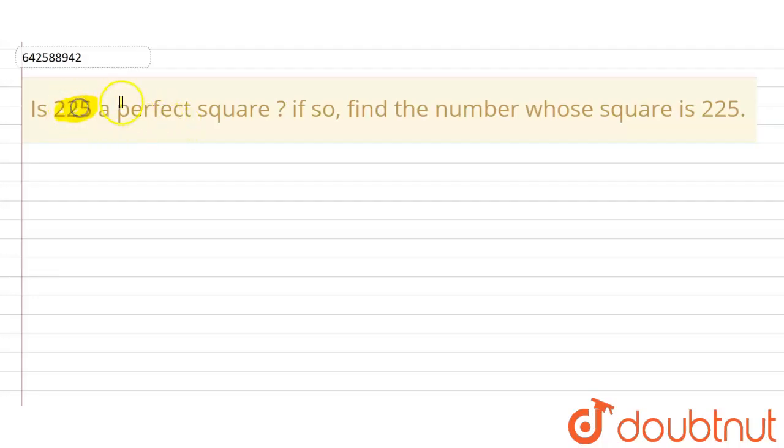The question is: Is 225 a perfect square? If so, find the number whose square is 225. We'll find if this number is a perfect square or not by using the method of prime factorization, and for that we'll find its factors.